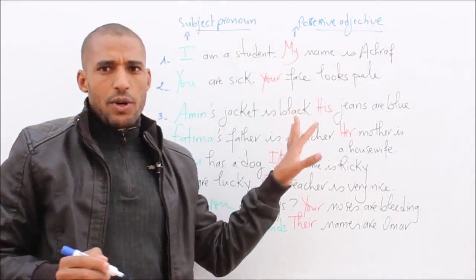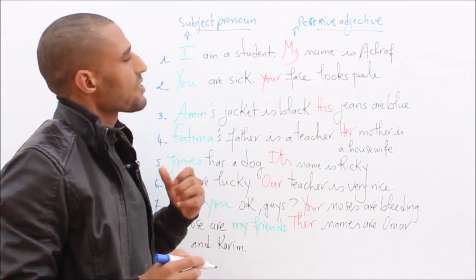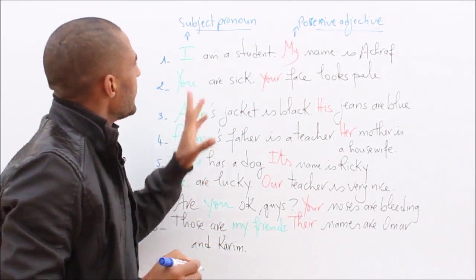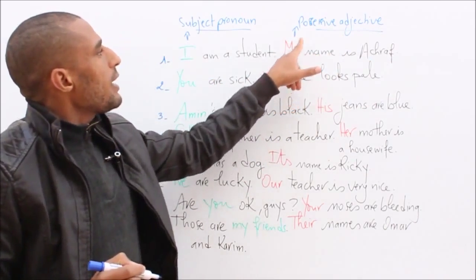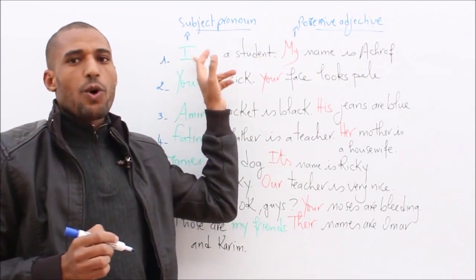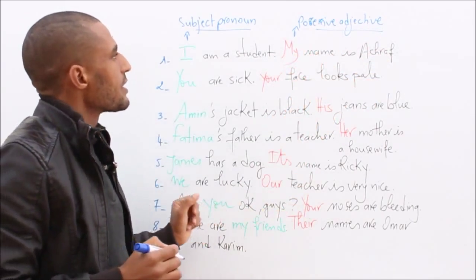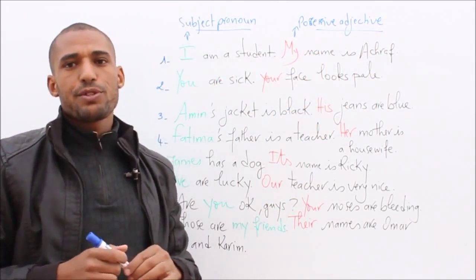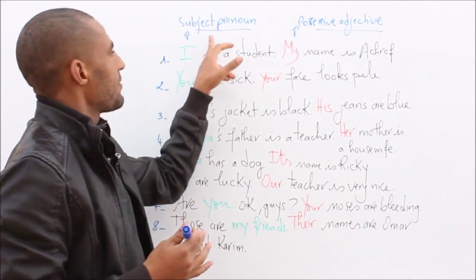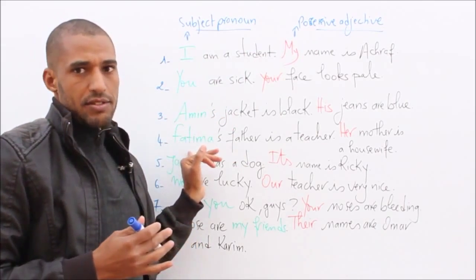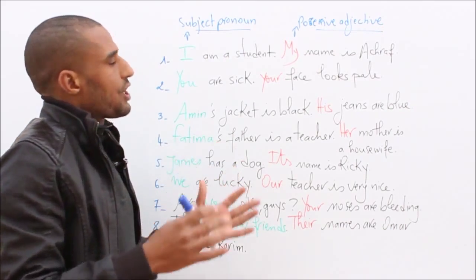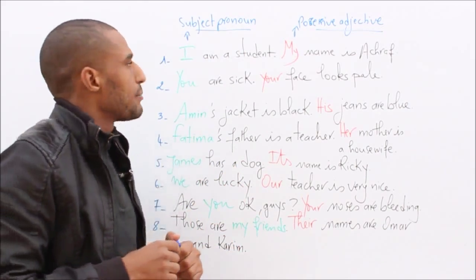This is exactly what we're going to discover right now as far as the remaining sentences are concerned. My name is Ashraf — 'my' is a possessive adjective. It refers to the subject pronoun 'I'. All possessive adjectives refer to a previous pronoun or noun — maybe a pronoun, as in this case, or it can be a noun too: a proper noun or a noun in general, whatever that type of noun is.